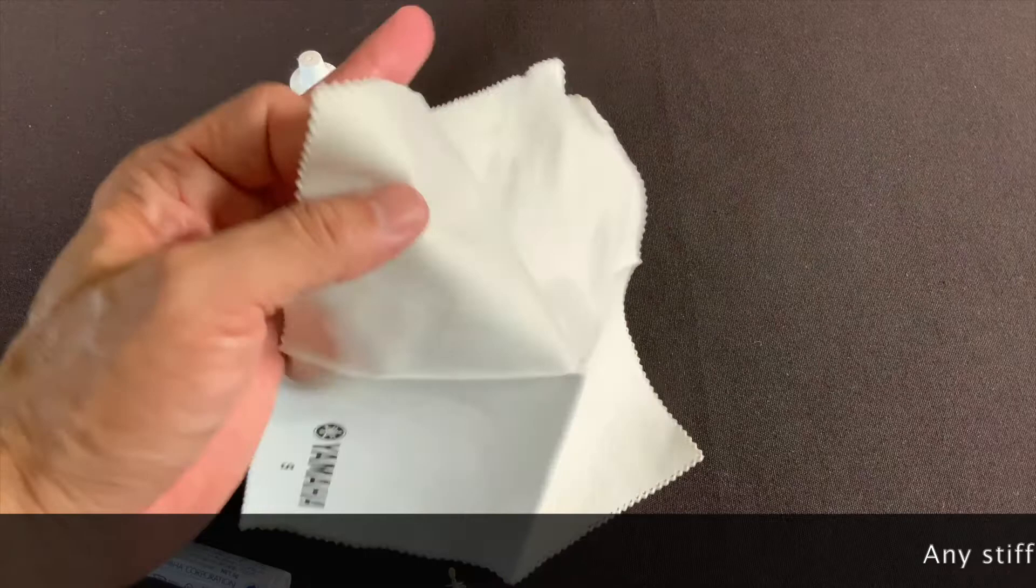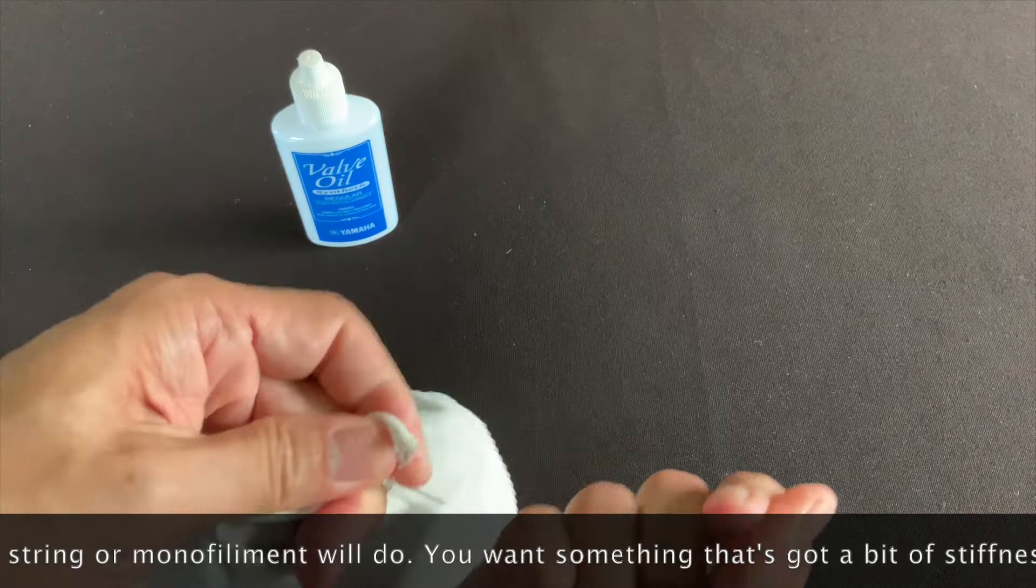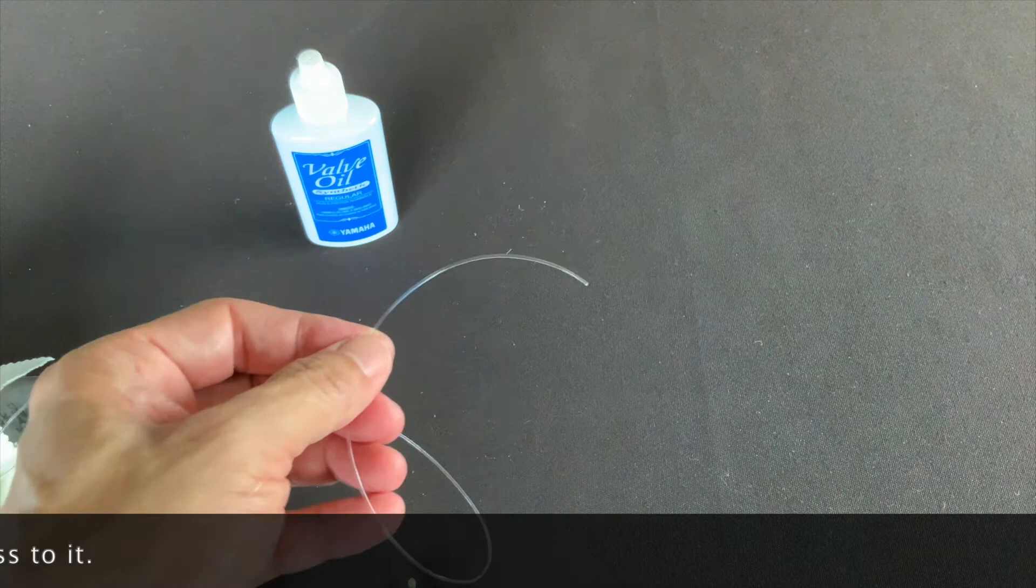So with this cloth, what I'll do is take a corner, take my 80-pound fishing string and tie a loop around here, pull it tight. I'll be able to pull this through - I'm gonna have to cut this end off - but just feed one end into the lead pipe and dry my horn off.